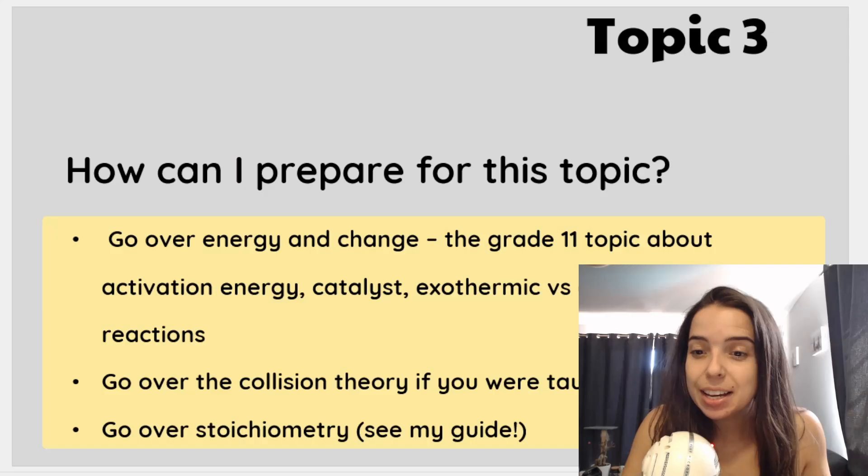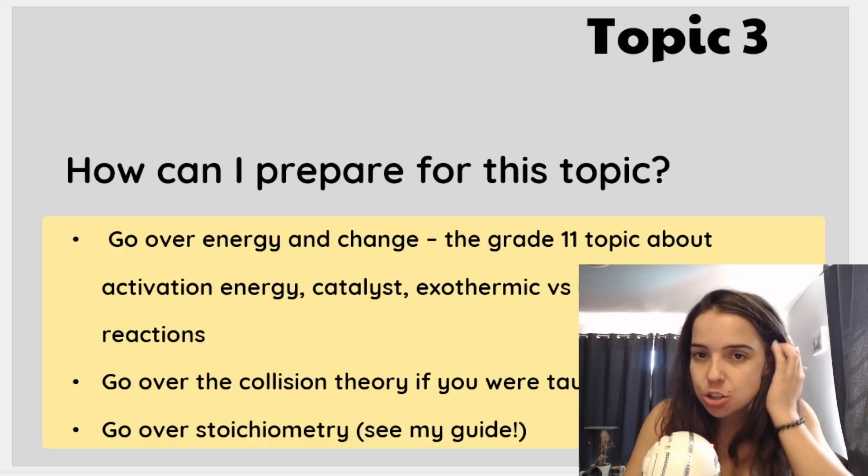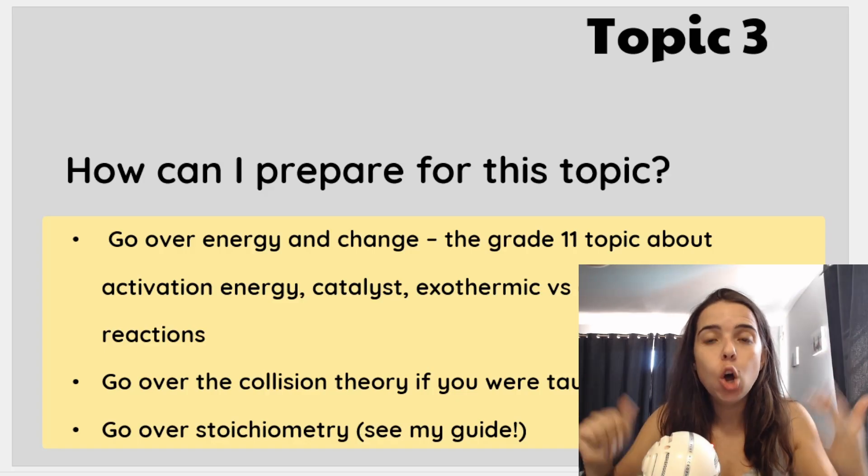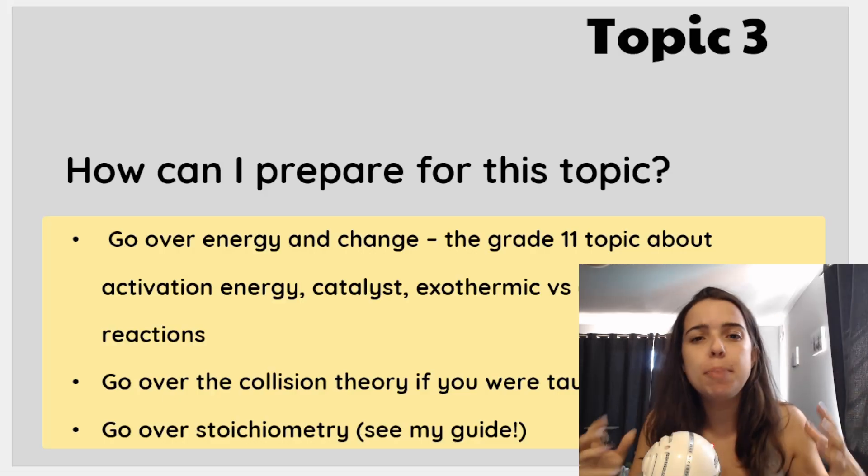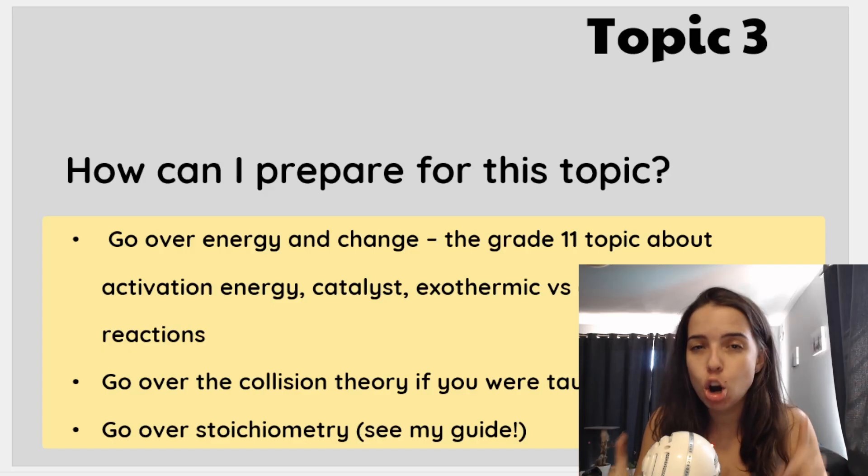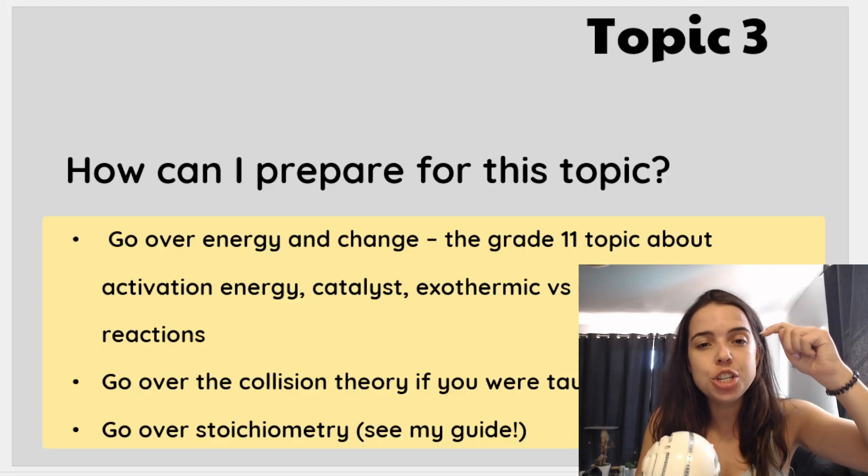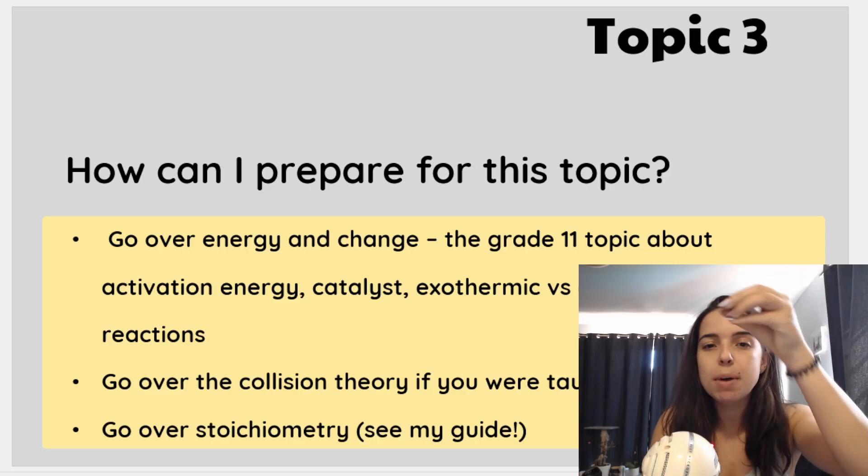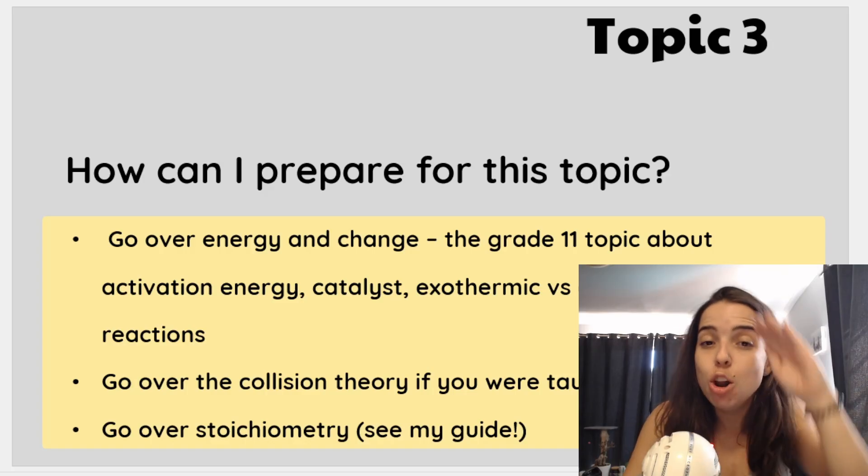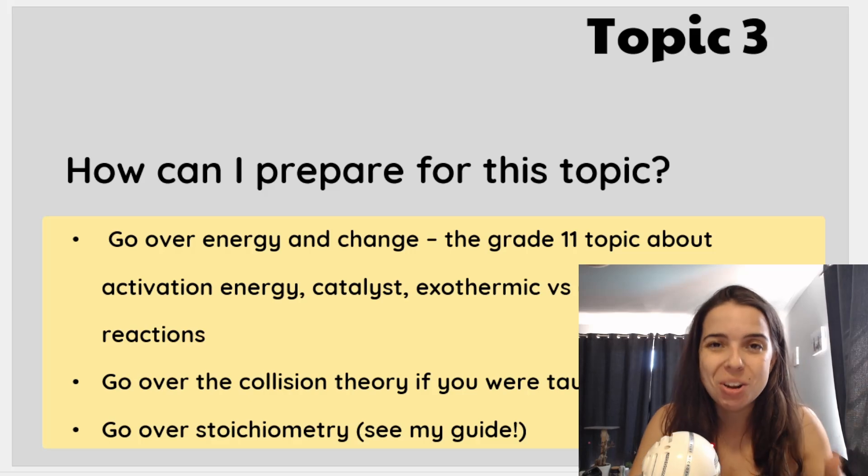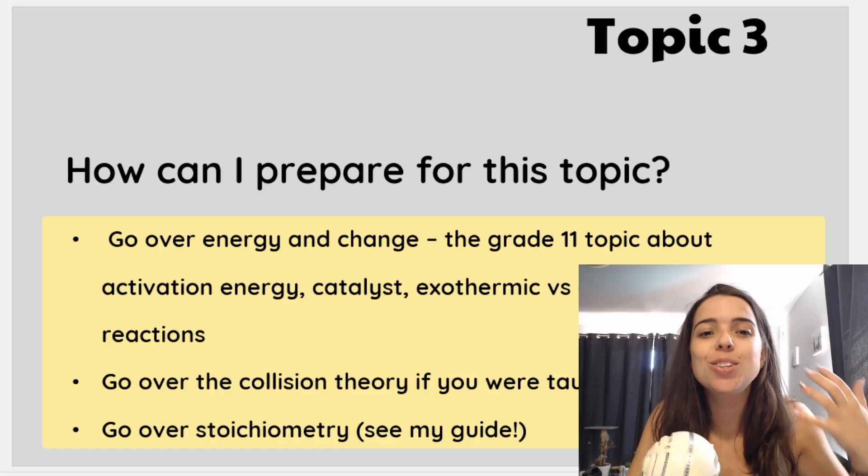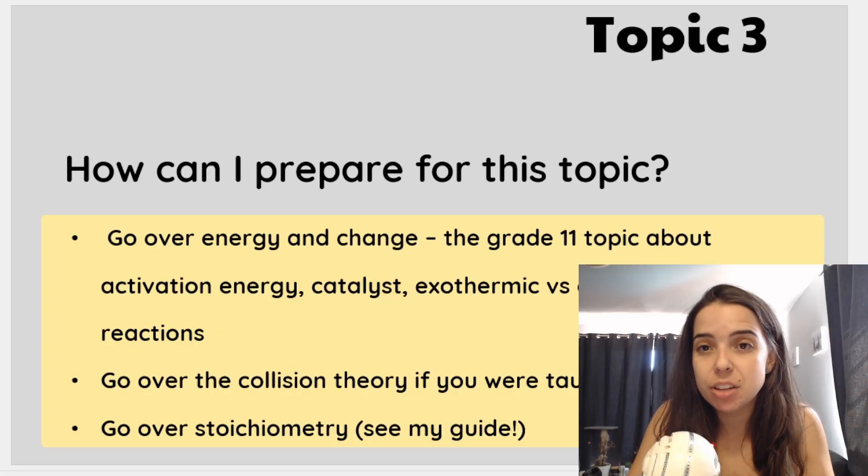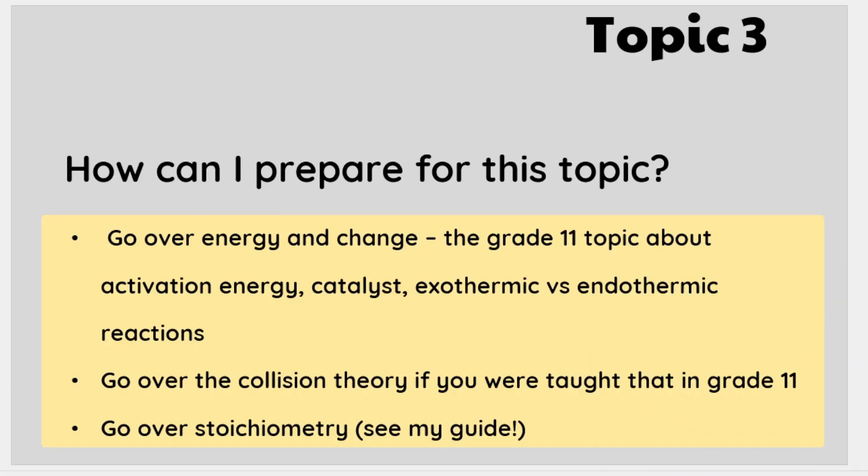But how can you prepare for this? This topic is strongly linked to energy and change, which is the grade 11 topic. Now, if you can recall, we learned about activation energy, catalyst, exothermic versus endothermic reactions, basically how the energy changes as the reaction proceeds. So we need an activation energy in order to get the reaction started. Then you have the activated complex at the top. A catalyst speeds up the rates of the reaction by lowering the activation energy, all of that stuff. You need to know again for this topic. They can test this in grade 12, but the rates and extent of chemical reactions builds on this. If you've already learned about the collision theory, which a lot of schools already teach this in grade 11, go over that again because that is what this topic is built upon, the collision theory.